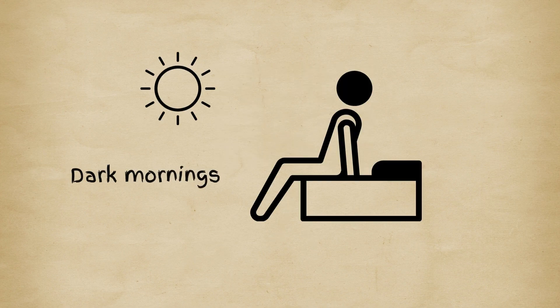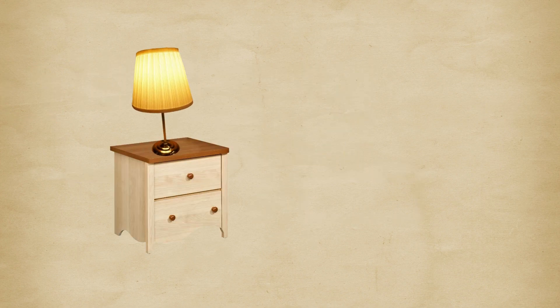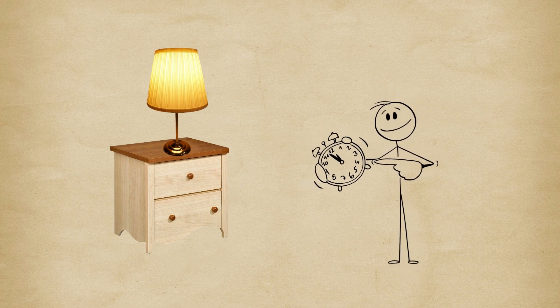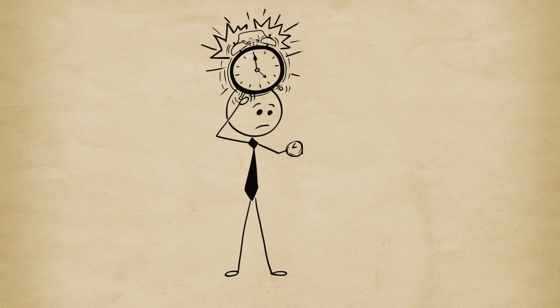And if you live somewhere with long, dark mornings, consider using a light box or sunrise alarm clock to simulate daylight. It works wonders for resetting your internal clock.